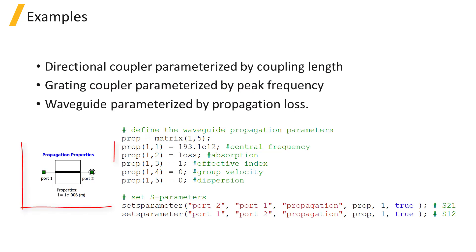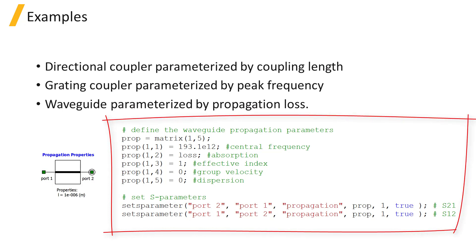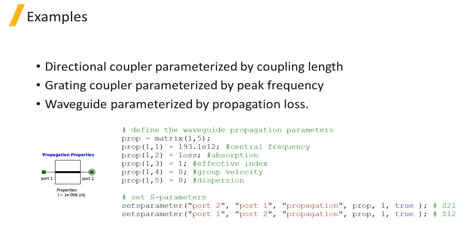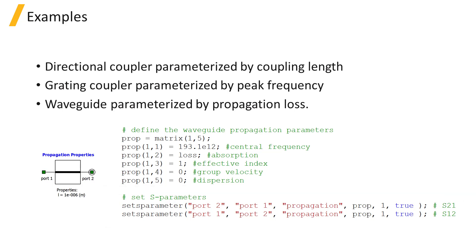Let's consider this last case of a waveguide parameterized by propagation loss. Here's an example script which could be used to define the waveguide propagation parameters and set the S-parameters of the scripted element. This script uses the set S-parameter command to set the S-parameters between input and output ports.